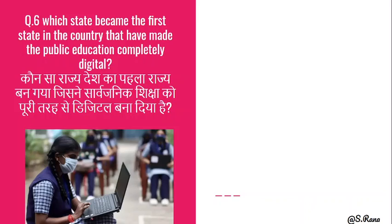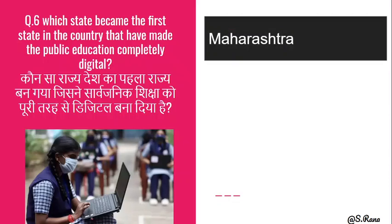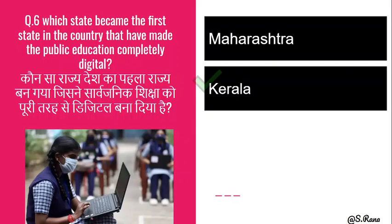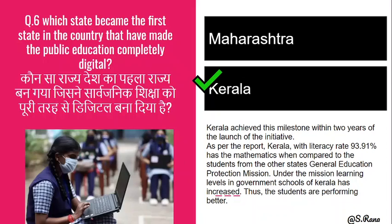Next question: Which state became the first state in the country to make public education completely digital? The correct answer is Kerala. Kerala has become the first state to achieve fully digital public education. According to reports, 93.91% of children in Kerala learn mathematics under the General Education Protection Mission. The learning levels and quality of education in government schools of Kerala have increased significantly, and students are performing better.